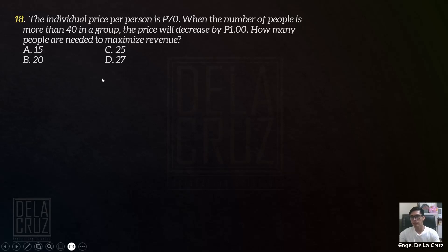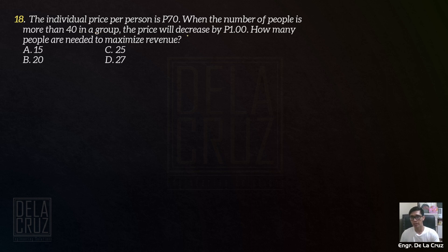Number 18. The individual price per person is 70 pesos. When the number of people is more than 40 in a group, the price will decrease by 1 peso. How many people are needed to maximize the revenue?